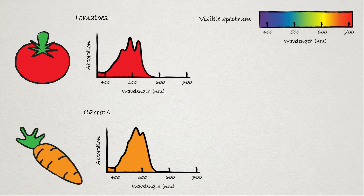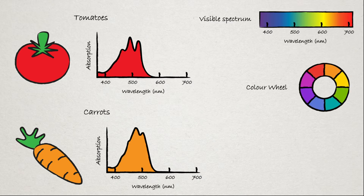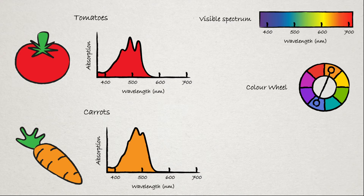This is because of color theory, which gives us the color wheel. Colors that are opposite on the color wheel are called complementary. Carrots appear more orange, not because they reflect more orange light than a tomato, but because they absorb more blue light, which is the complementary color to orange. So while a carrot is yellow, orange, red, and even a little green, they look orange because they're not blue.